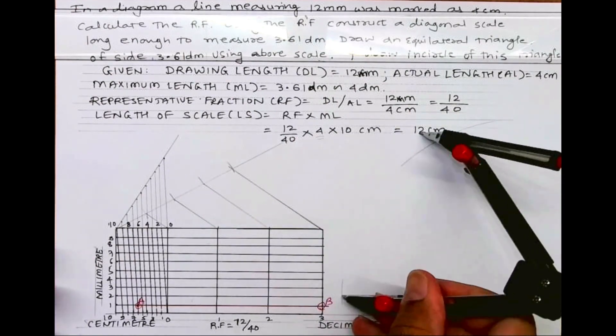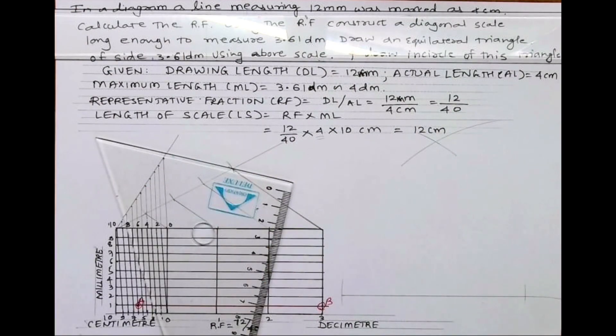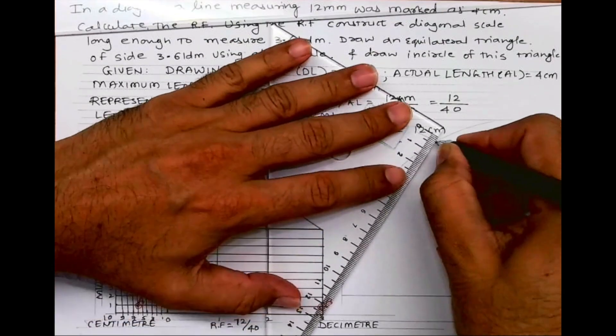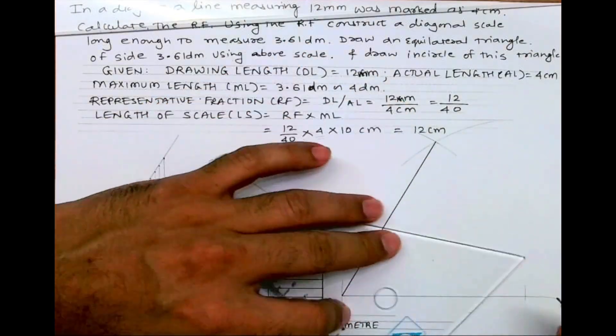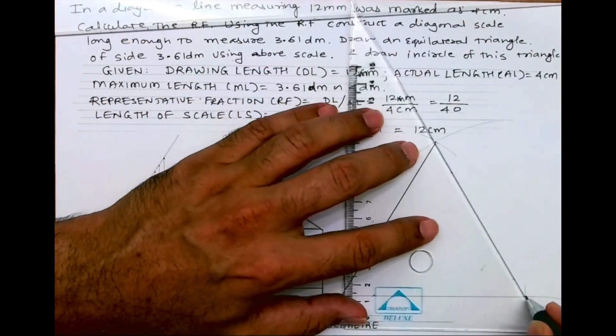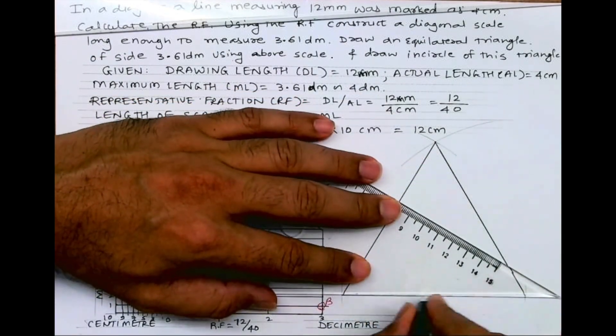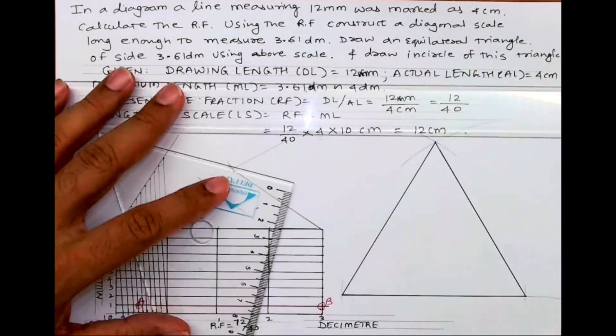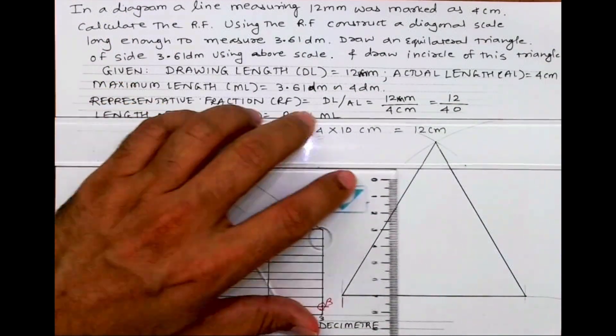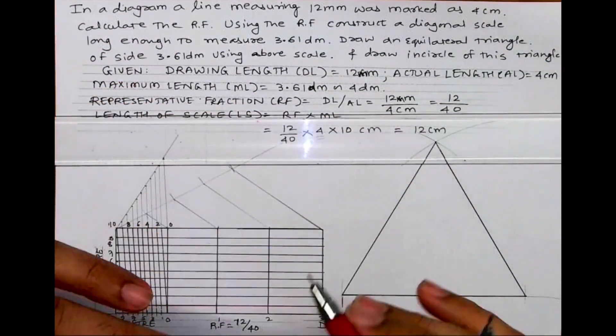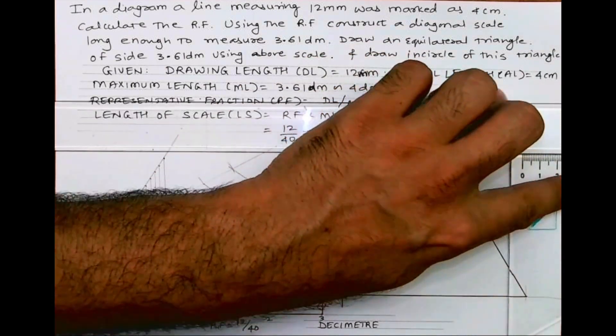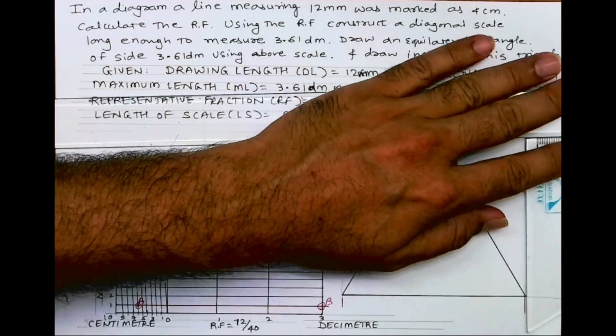Then I will draw a triangle. So I will get an equilateral triangle of side 3.61, an equilateral triangle.